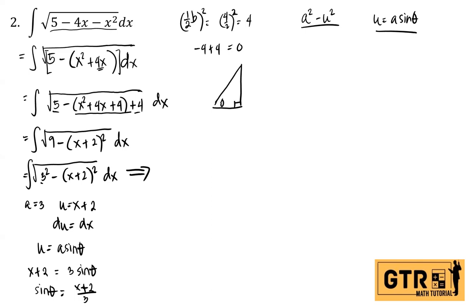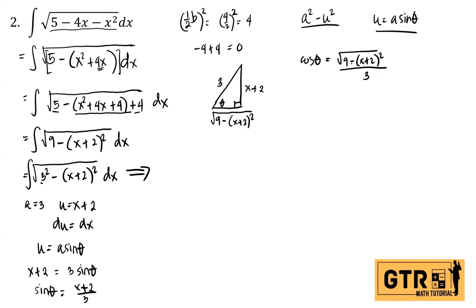From the right triangle with angle theta: sine theta equals opposite over hypotenuse, so the opposite side is x plus 2 and the hypotenuse is 3. By the Pythagorean theorem, the adjacent side is the square root of 9 minus (x plus 2) squared. Therefore cosine theta equals the square root of 9 minus (x plus 2) squared over 3, and so 3 cosine theta equals the square root of 9 minus (x plus 2) squared.